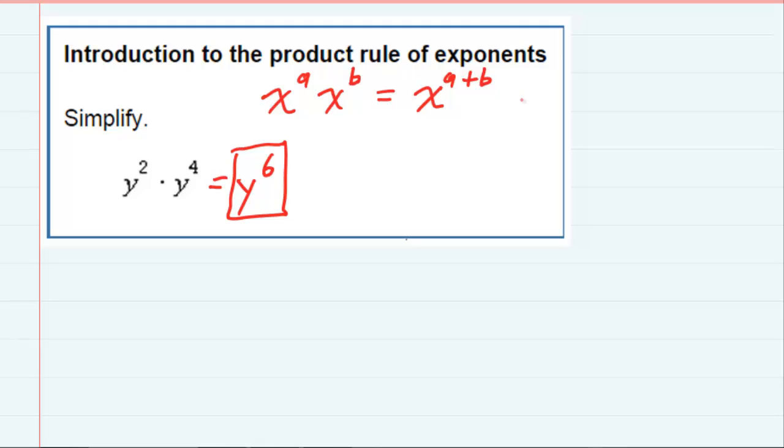Other than using the rule, which says when you multiply with the same base you can add the exponents, I'm going to also write this out. y to the 2nd is y times y, and that is being multiplied with y to the 4th, which is y times y times y times y. I've actually got four of them there, and as you can see,